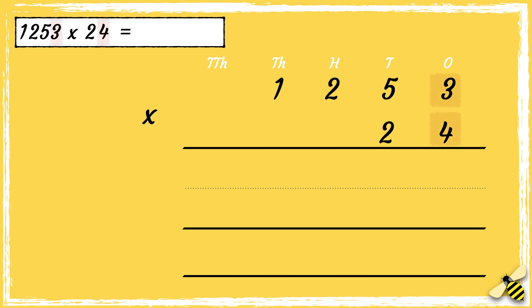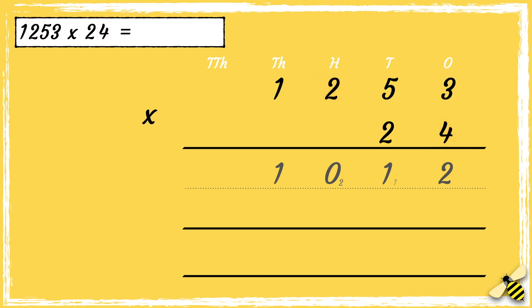Four times three is twelve. We can drop the one below in the tens column. Then we can multiply four by five tens, so four times five is twenty, add one more is twenty-one. We can drop the two below in the hundreds column. Now we need to multiply four by two hundreds, so two times four is eight, add two more is ten. We can drop the one below in the thousands column. Now we need to multiply four by one thousand, so four times one is four, add one more is five.